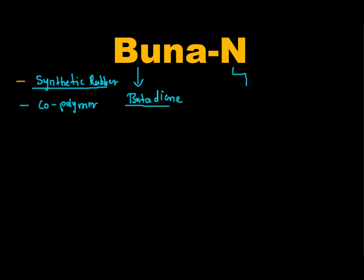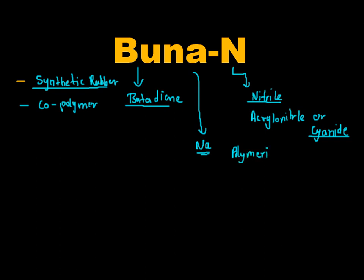N stands for nitrile. It can also be called acrylonitrile or cyanide. Na is sodium, which is used for the polymerization process, or polymerization agent.